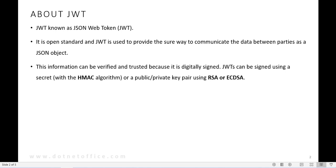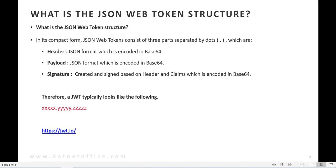This information can be verified and trusted because it is digitally signed. JWT can be signed using a secret, basically written using an algorithm called HMAC, or a public-private key using RSA or ECDSA. We will see how it is secure while transmitting data between two parties.